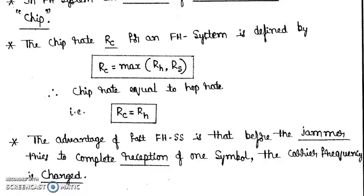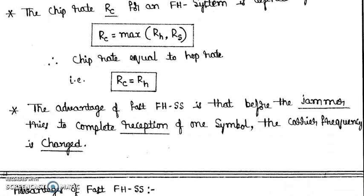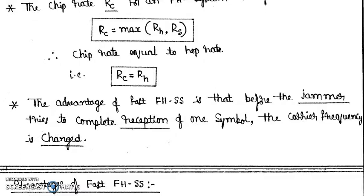But here only one symbol when you are sending you are changing the carrier frequency constantly so it is very difficult for an intruder to track the information if you go for fast FHSS. Because the hop rate is here greater than the symbol rate. Then only one symbol is sent and during the reception of one symbol the carrier frequency is constantly changed. So detection becomes very difficult in case of your fast FHSS.